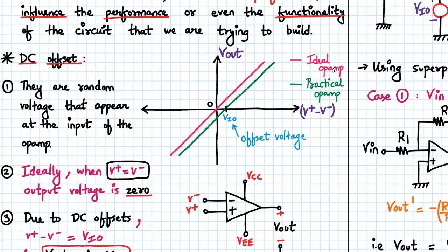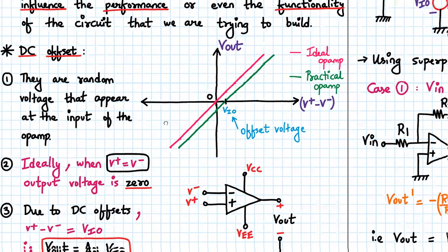But a practical op-amp will have a small offset voltage. So V+ minus V- equals VIO, which is not zero. That's how we check it practically.